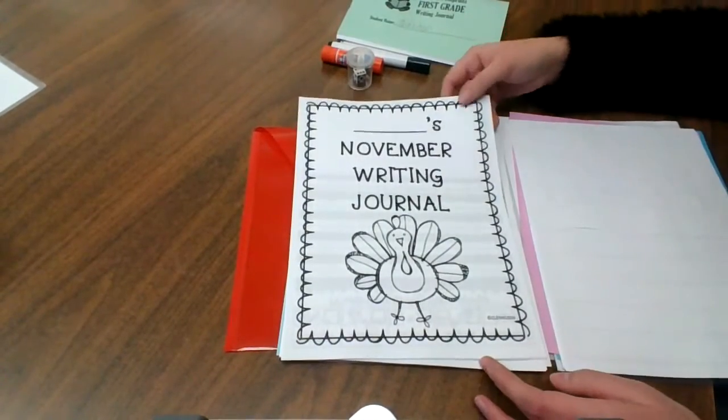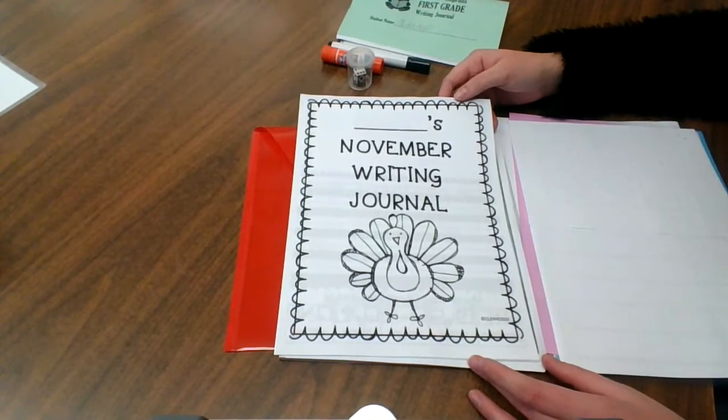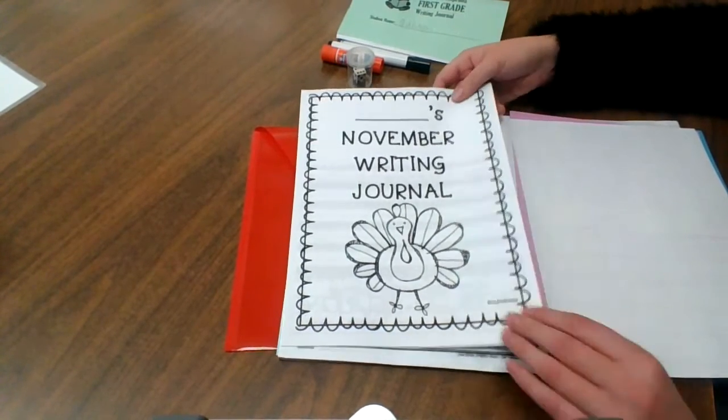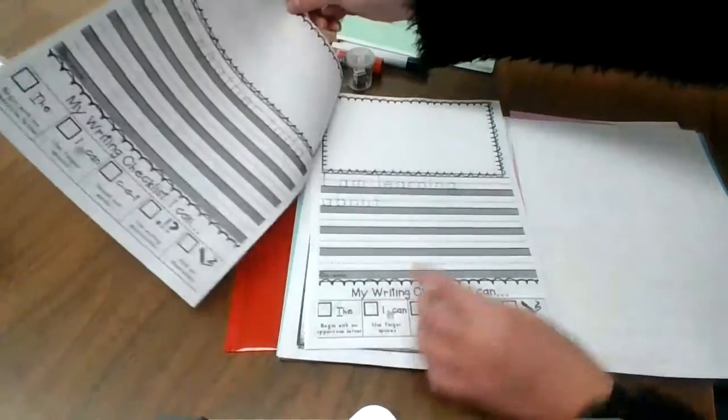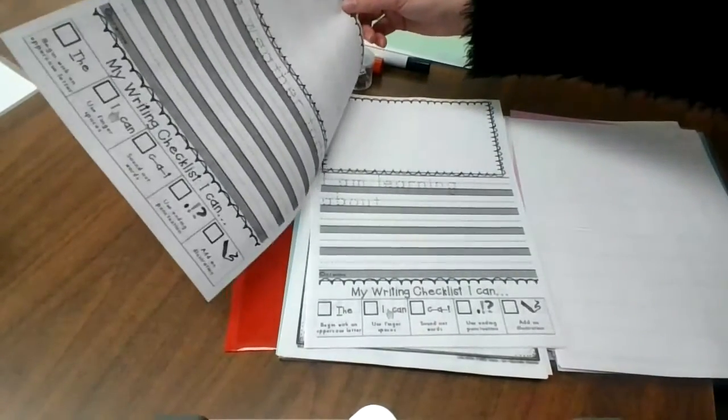Then you will see our November writing journal. This will also be used during daily five and will be one of our stations called work on writing. Your student will trace the sentence stem and finish the page and draw a picture.